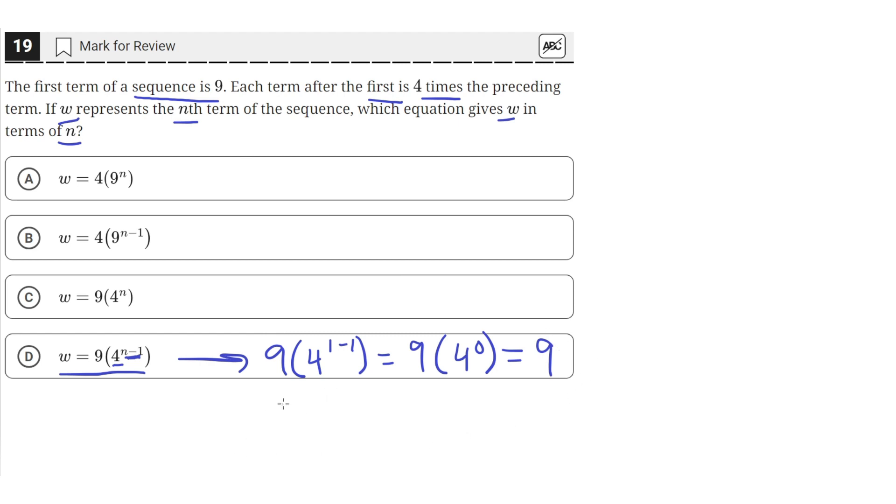And then we can check the next one as well. When we have the second term, four raised to the two minus one is just equal to nine times four. Since two minus one is just one, and anything raised to the first power is just that thing itself. So nine times four is just 36, which is four times the previous term. And then we can just keep going on and on with larger values of n, but they would all result in four times the previous term. So D is the correct answer.